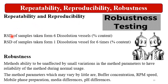Then repeatability and reproducibility: %RSD of samples taken from 6 dissolution vessels, and %RSD of samples taken from 1 dissolution vessel for 6 times. Then robustness — the method's ability to be unaffected by small variations in method parameters, to have reliability during normal use. Whenever your method goes to the commercial site, some day-to-day and batch-to-batch variations will occur. The method should be robust and should not be affected by small changes or small variations. These variations may happen in buffer concentration, RPM or speed, mobile phase preparation, media differences, and pH differences.